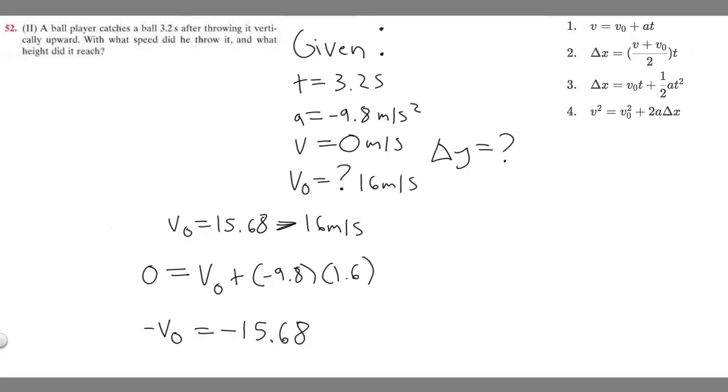And so looking at our equations to solve it, it's not going to be the first one because it doesn't contain it. And then it depends which one we want to use on the last one. I think it would be best to use this one right here. And so because we're basically given everything, we just got V sub 0. We have 0 and minus 9.8. We just got to find this.